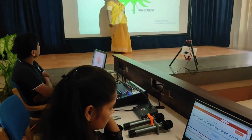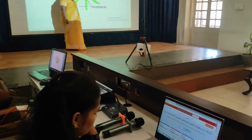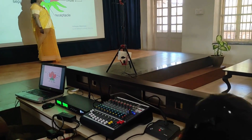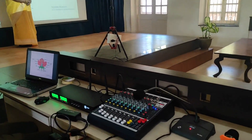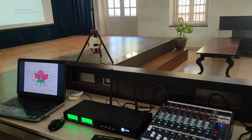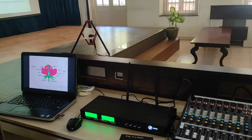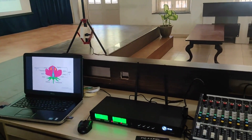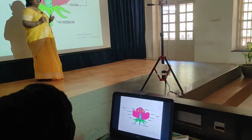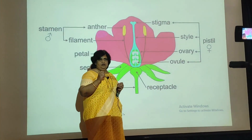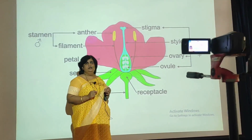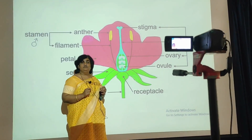Today's topic is the typical angiosperm flower. Last time we studied classification — cryptogams and phanerogams. Under phanerogams, we had angiosperms and gymnosperms, and we know the difference between these. Under this, we are going to study the typical angiosperm flower.